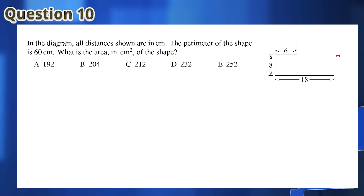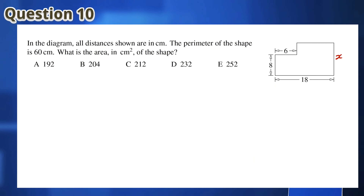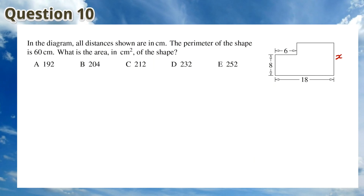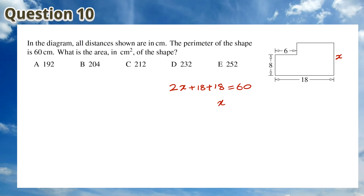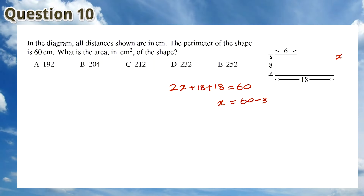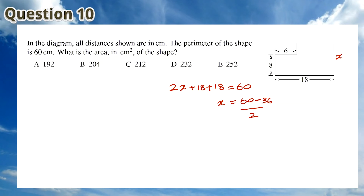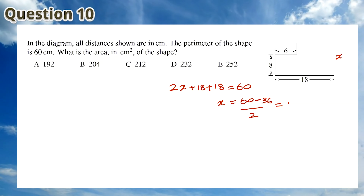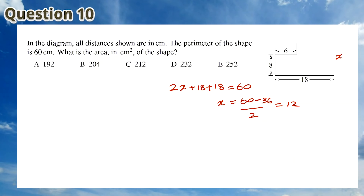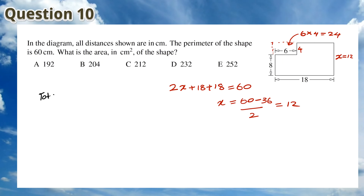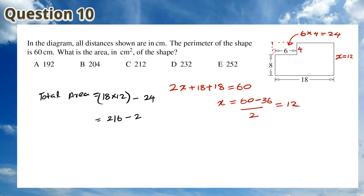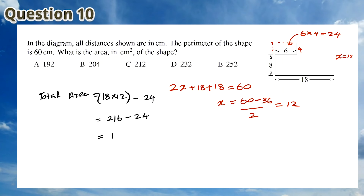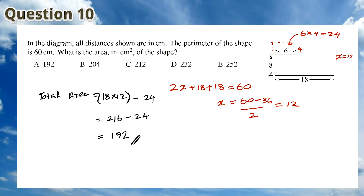For Question 10, even though a section has been cut off in the diagram, there is no difference to the perimeter it would have if it was a complete rectangle. We can write an equation: 2x plus 18 plus 18 equals 60, which is the given perimeter. This means x equals 60 minus 36 divided by 2, which is 12. So the total area equals 18 times 12, which is the full rectangle, minus the cut-off section of 24, giving 216 minus 24, which is equal to 192. This means that the answer is A.